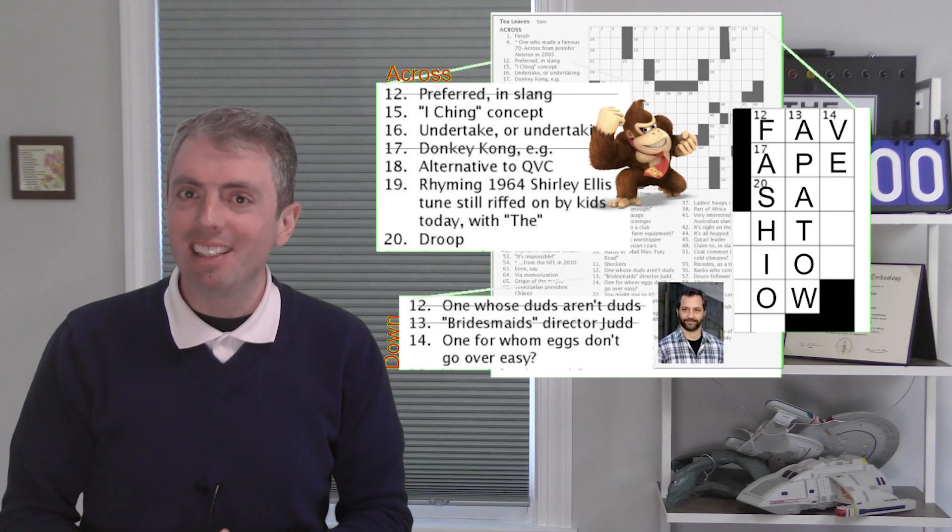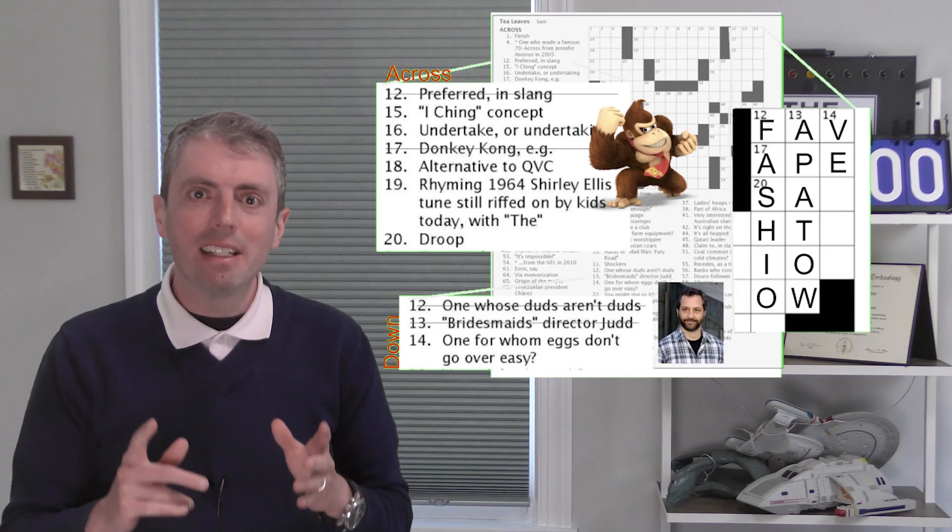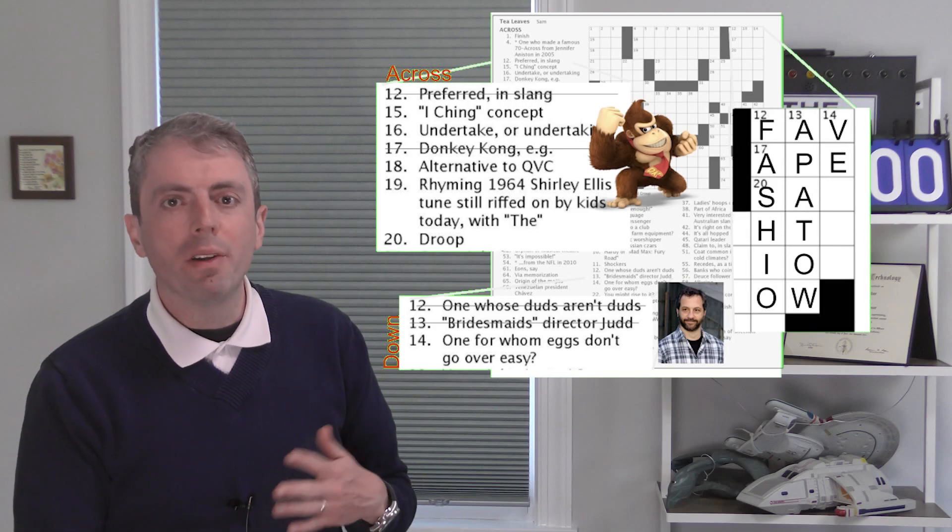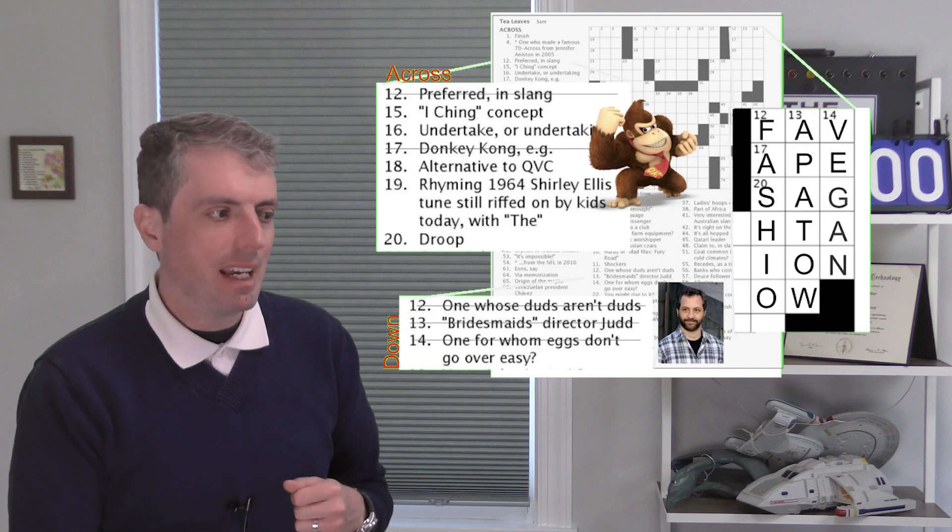Haha, so now it's clear what 14 down is. A vegan doesn't eat any animal products, so eggs wouldn't go over at all. So that must be the answer.